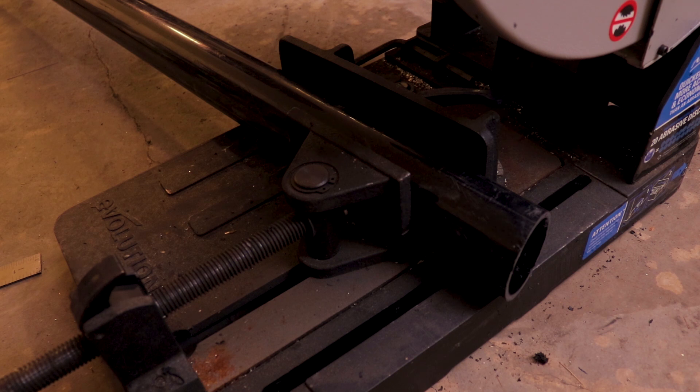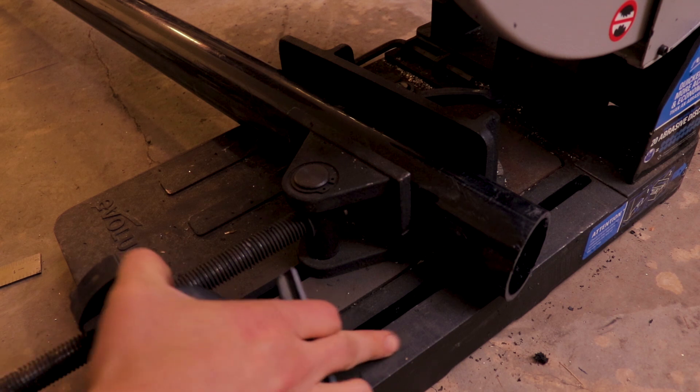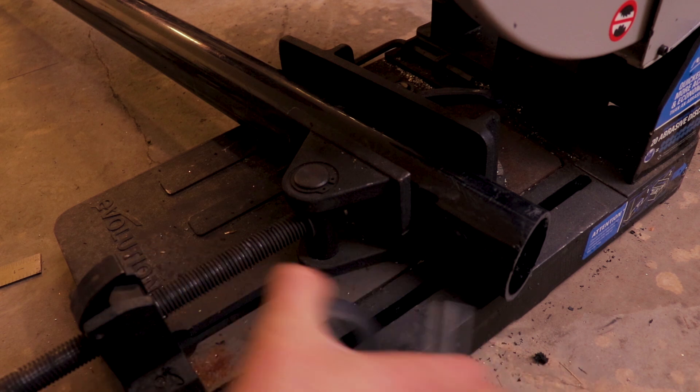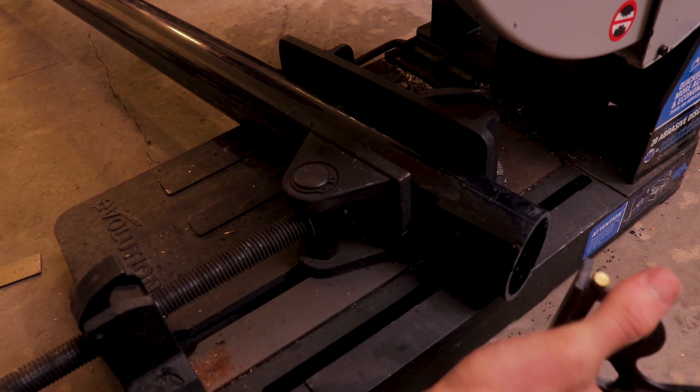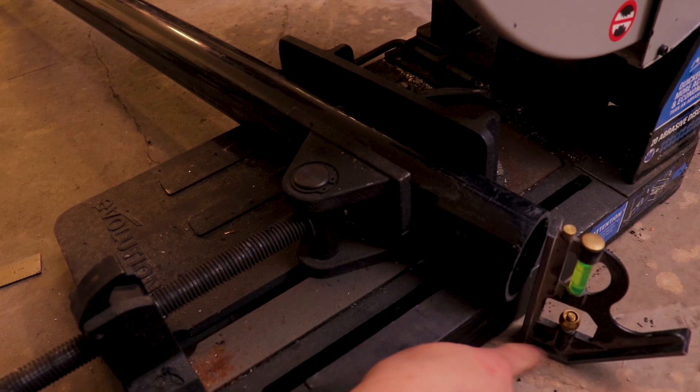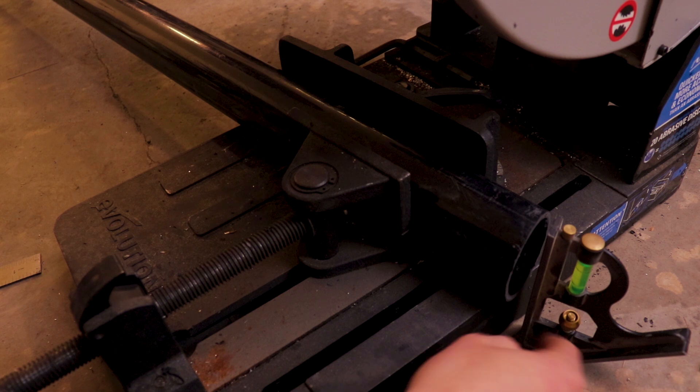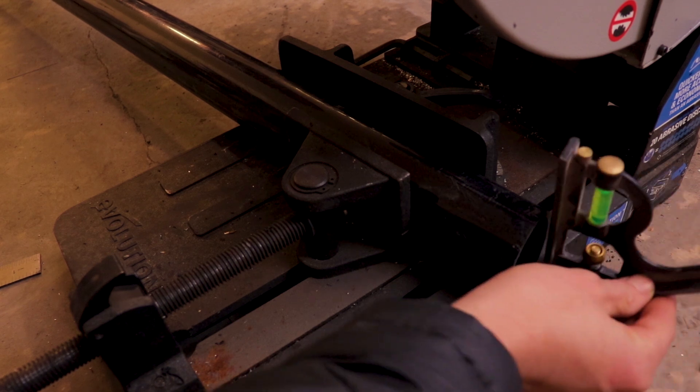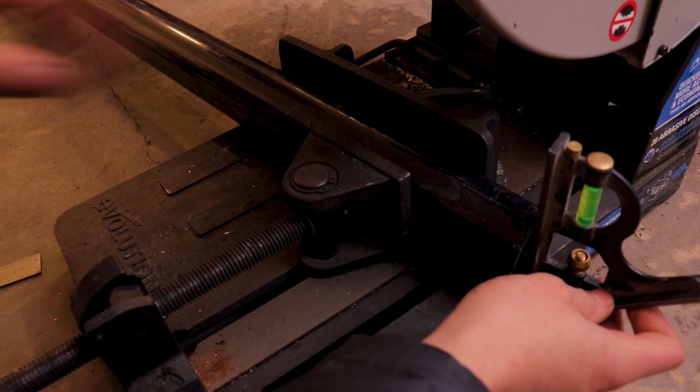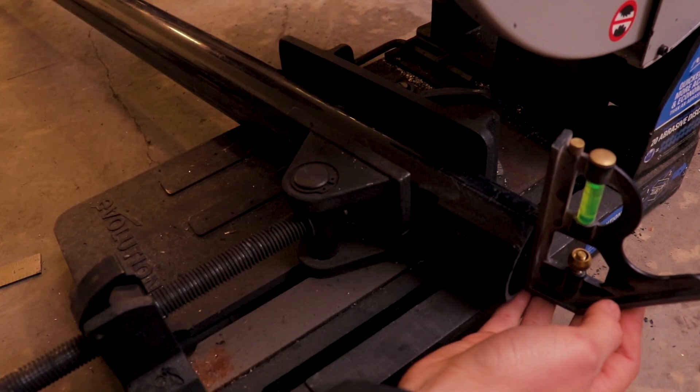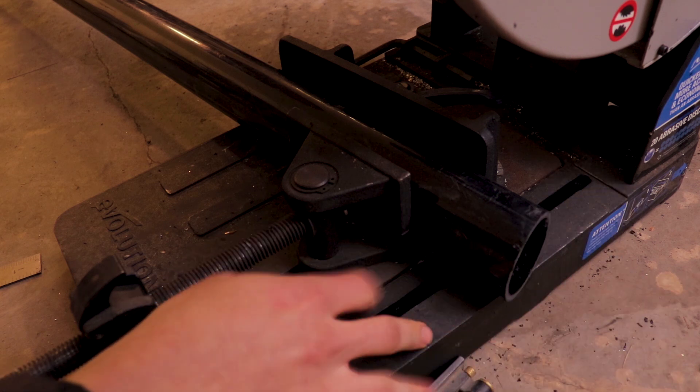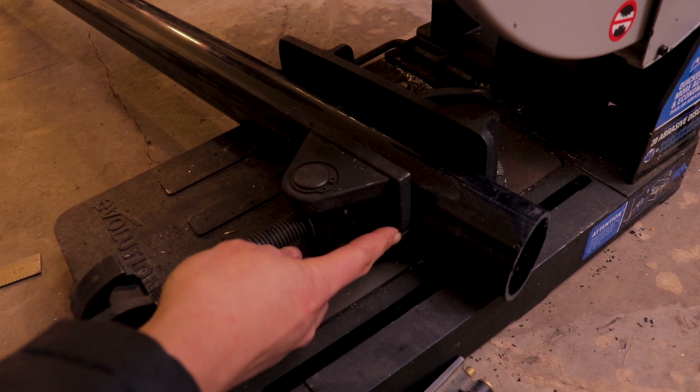Another way that you can do this if you have a base that's longer or maybe a stand that's right there is you can use a straight edge, something like this, to rest on your base. And just twist it until it hits both sides so you know that it's straight up and down. But if you don't have that like a lot of these saws, this is the best way to go.